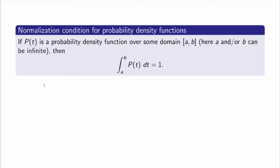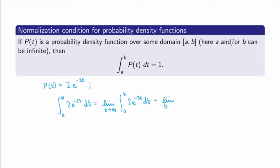Looking back at our previous example where the probability density function was 2e^(−2T), we can check that this is indeed a valid PDF. We integrate over the whole domain of positive T and show the result equals one. This is the limit as B → ∞ of the integral from zero to B, giving the limit as B → ∞ of minus e^(−2T) evaluated from zero to B, which yields minus e^(−2B) plus one. That limit is zero, so we end up with exactly one — confirming this was a good choice for a probability density function.